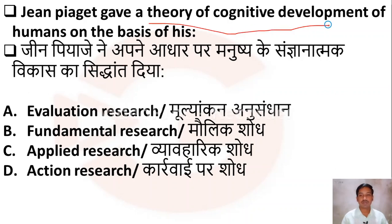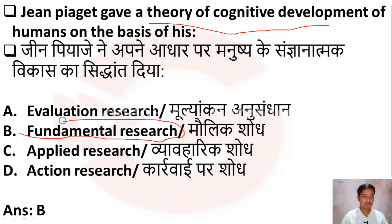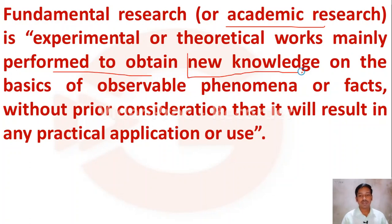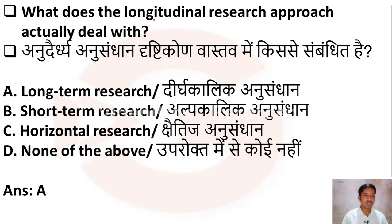The next question: Jean Piaget gave a theory of cognitive development of humans on the basis of which type of research? Option A: evaluation research, Option B: fundamental research, Option C: applied research, Option D: action research. Jean Piaget's theory was based on fundamental research. Fundamental research is also known as academic research — it is theoretical work mainly performed to obtain new knowledge based on observable phenomena.